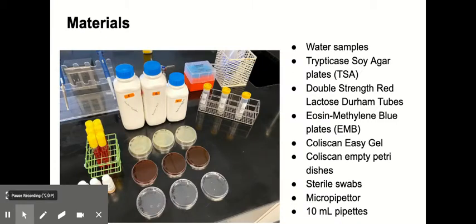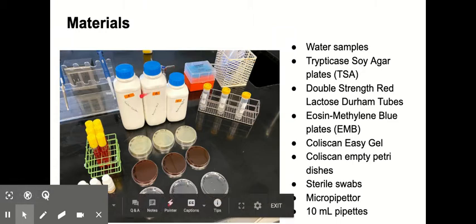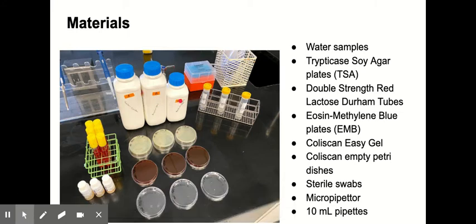The materials used for this lab are the three water samples, which I labeled A, the sunken garden, B was retention pond, and C was from the turtle tank. And I distributed those water samples into some smaller sterile tubes.